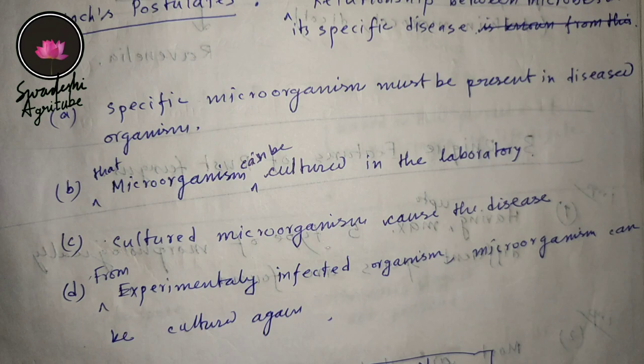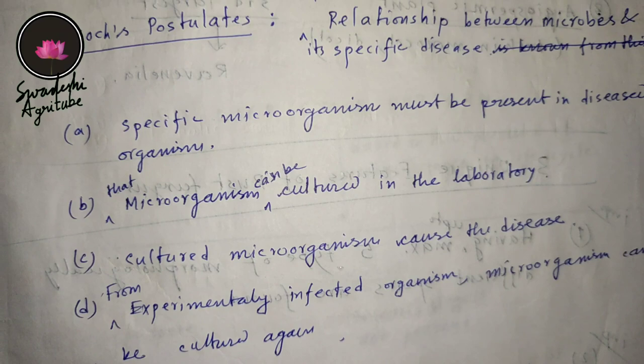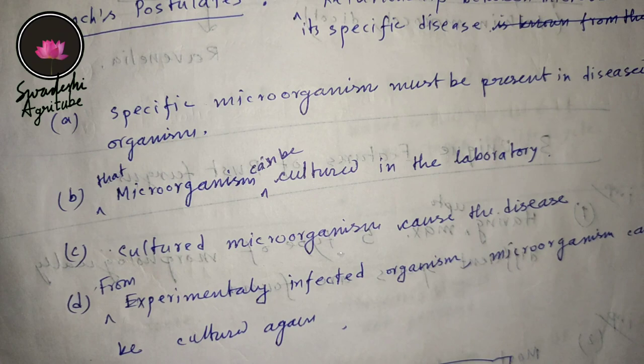For the second postulate, you have a diseased person, there should be one specific microorganism. Take that microorganism to your laboratory and check whether you are able to culture it or not. The third postulate is that the cultured microorganism causes the disease. We have just cultured it under artificial conditions in the laboratory.